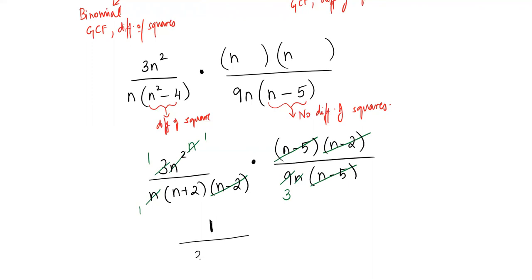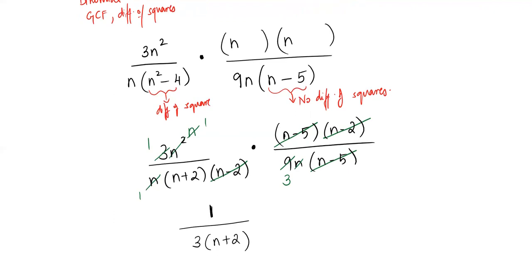In the denominator, we have 3 and (n+2) remaining. Our final answer is 1 over 3(n+2). There's no minus to absorb and nothing further to cross-cancel, so this is fully simplified. I hope that helps — I'll see you in the next section. Take care!